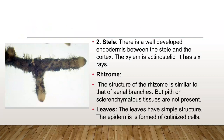Rhizome: the structure of the rhizome is similar to that of the aerial branches, but pith and sclerenchymatous tissues are not present. Leaves: the leaves have a small structure and the epidermis is formed of cutinized cells.